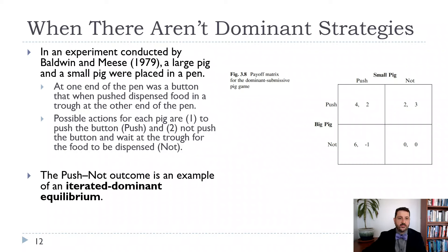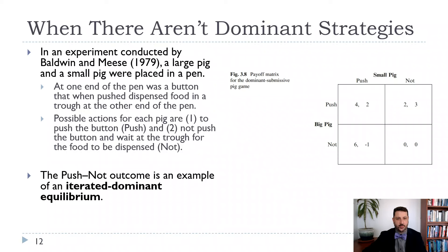Here we have an example of a game. At one end of the pen was a button that, when pushed, dispensed food in a trough at the other end. So you can either push the button — these are for pigs — or not push the button and wait for the food to be dispensed. We have two players: the big pig and the small pig. Big pig is the row player, player one, so big pig's payoffs come first. Small pig is player two, so small pig's payoffs come second.